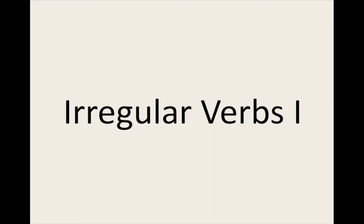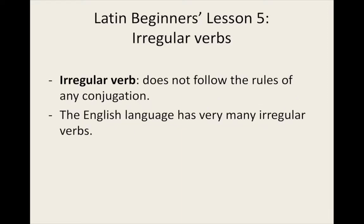So what do we mean by irregular verbs? An irregular verb is one which does not follow the regular patterns of any of the defined conjugations. Remember in previous lessons I introduced first and second conjugation verbs. A conjugation is a group of verbs which form tenses in the same way.